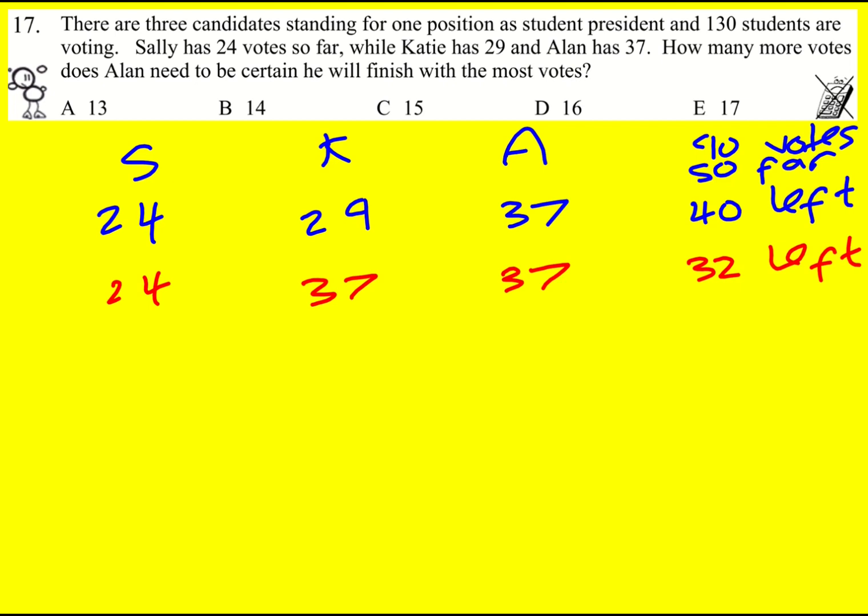So actually the worst Alan could do would be if he got 16 they could be guaranteed a tie but to win and get the most votes he's going to need an extra one. He's going to need 17 and that is going to be the answer to this question.